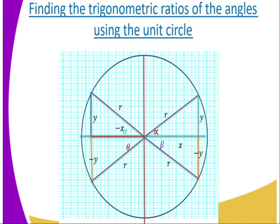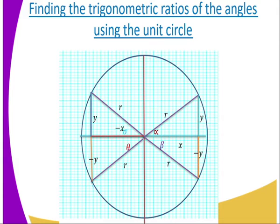Cos and sin are negative in the third quadrant. And when you go to the fourth quadrant, that is where beta is, and you are going to get that only cos is positive. So in that case, we now have all the ratios being catered for when using the unit circle.